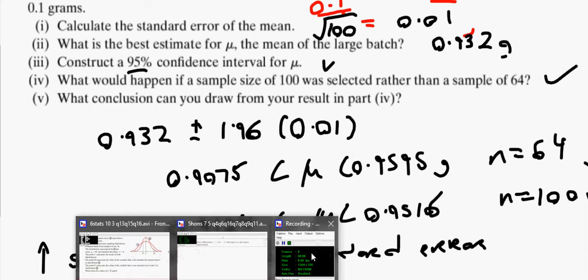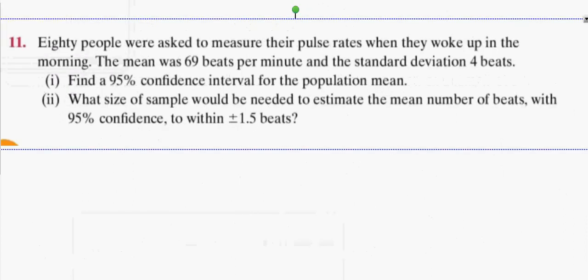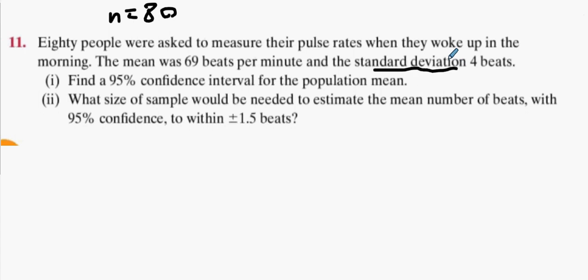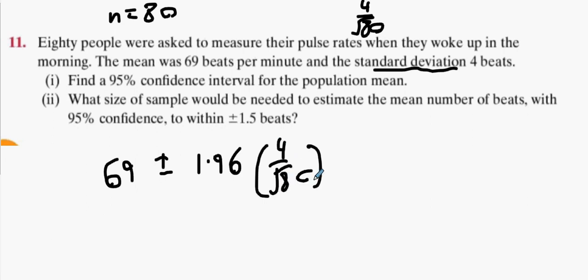Next one. 80 people are asked to measure their pulse rate when they woke up in the morning. n equals 80. Says standard deviation doesn't say standard error, so for me that's 4 divided by root 80 straight away for the standard error. It's 69 plus or minus 1.96 times sigma over root n, which is 4 over root 80.